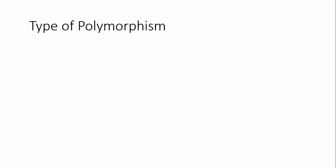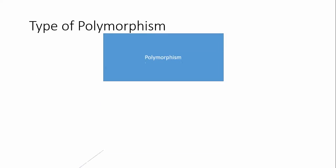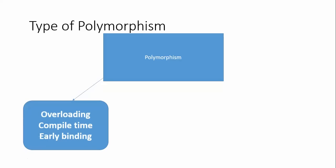There are two types of polymorphism in Java. One is compile-time polymorphism, also known as early binding. To understand compile-time or early binding, you need to understand one topic called overloading. In this video we will mainly focus on method overloading. Once you understand method overloading, you will know why it is called compile-time or early binding.